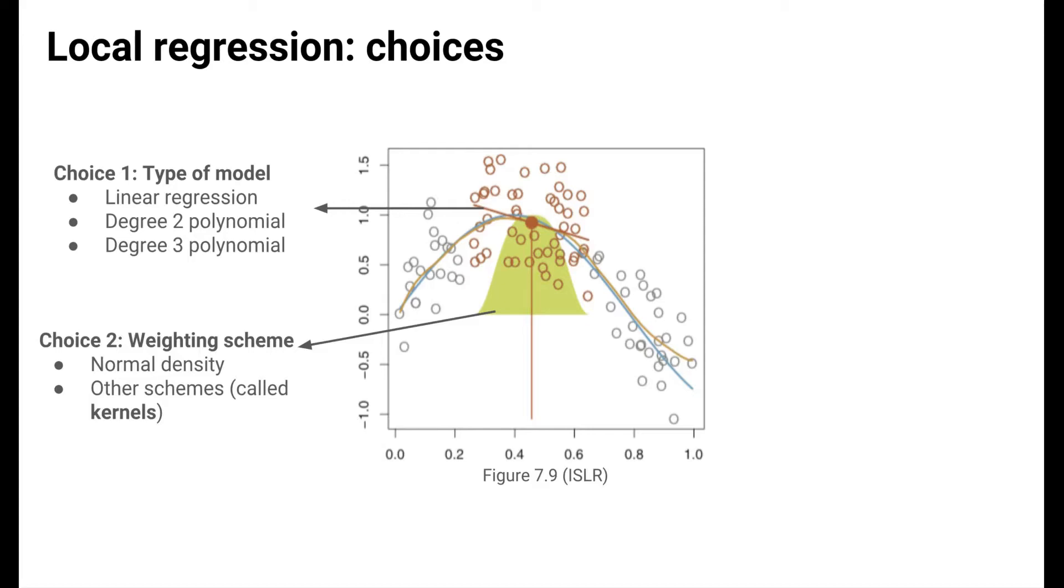Another choice is the weighting scheme to use. The one pictured here is a normal distribution, which is the most common. But there are many other weighting schemes possible that give high weight to nearby and low weight to far away points. These weighting schemes are also called kernels.